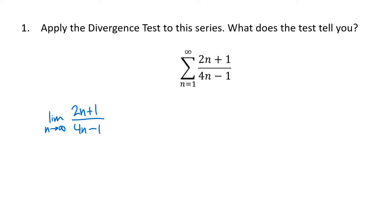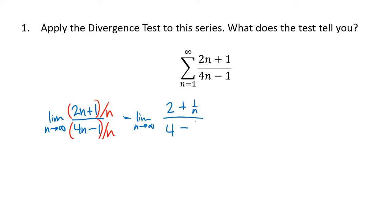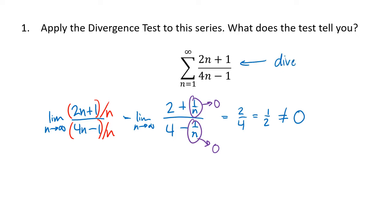We're looking at the limit as n goes to infinity of (2n + 1) divided by (4n − 1). We have a polynomial divided by a polynomial, so we divide top and bottom by the highest power of n, which is just n. We get the limit of (2 + 1/n) over (4 − 1/n). As n goes to infinity, 1/n goes to 0, so we get 2 over 4, which is 1/2. Crucially, that is not 0, so the divergence test tells us this series diverges.